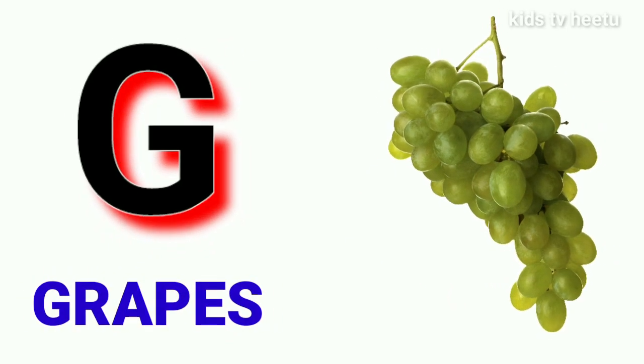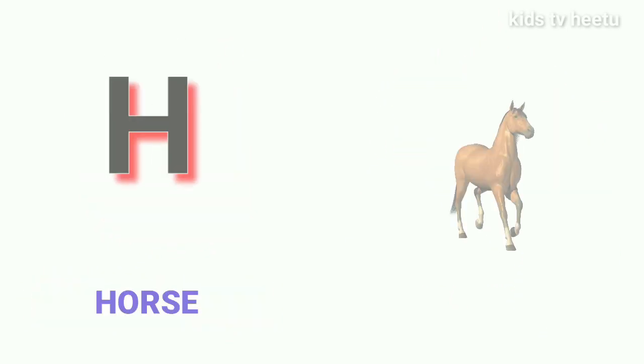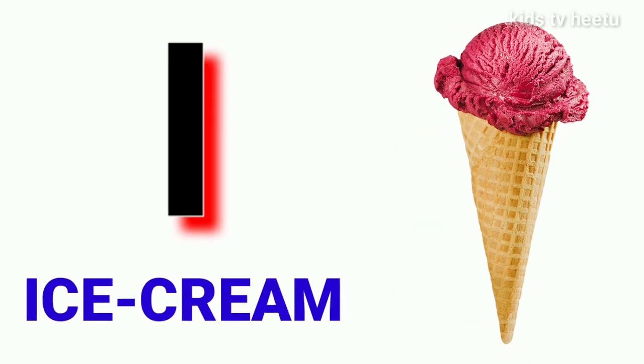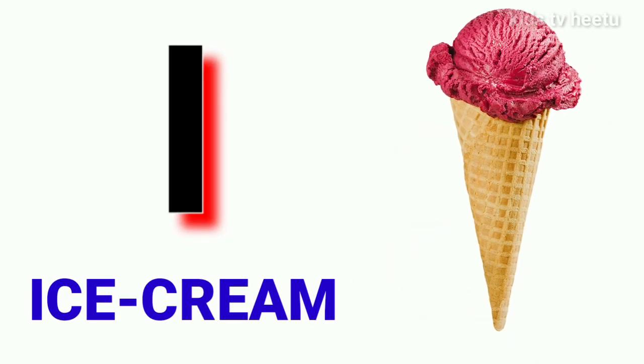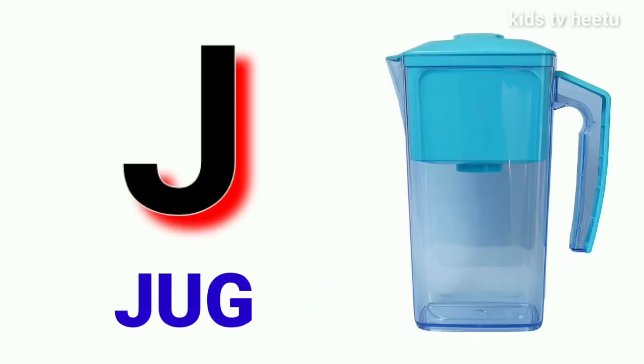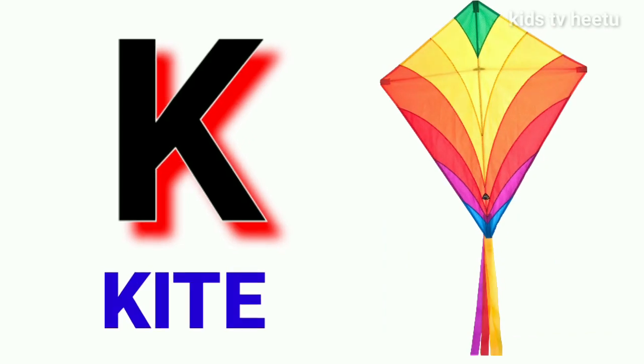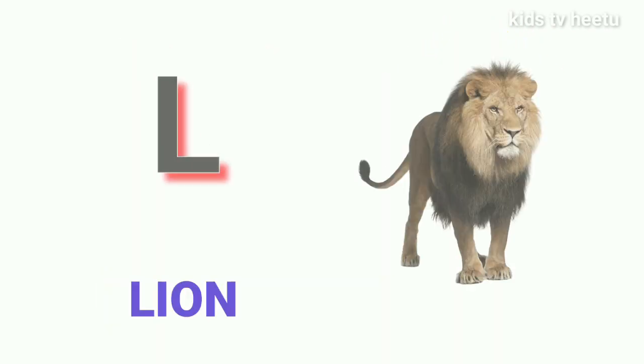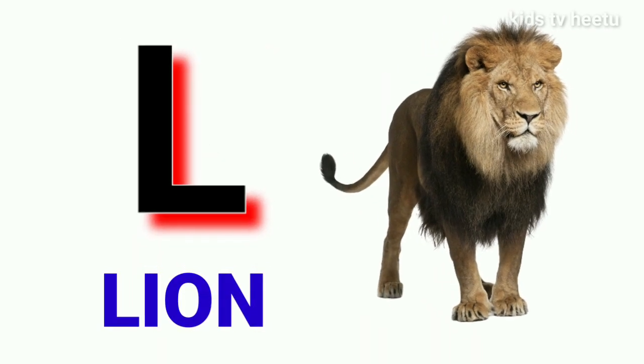G for grapes, H for horse, I for ice cream, J for jug, K for kite, L for loin.